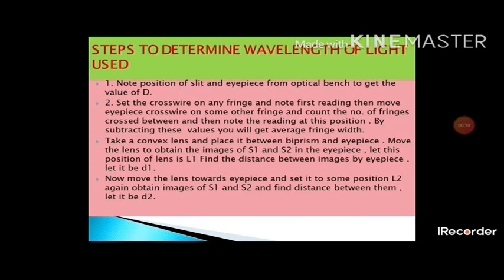The first step is to note down the position of the slit and eyepiece from the optical bench to get the value of capital D. In the second step, we find the value of beta. We set the cross wire on any fringe, note the first reading from the micrometer, then move the cross wire to another fringe, count the number of fringes crossed, and note the second reading. By considering these two readings, we get the average fringe width beta.